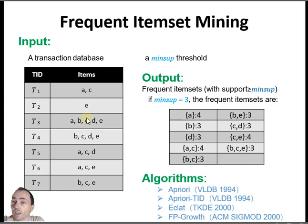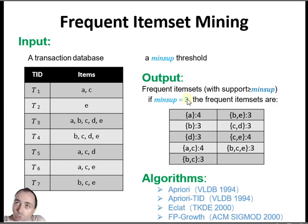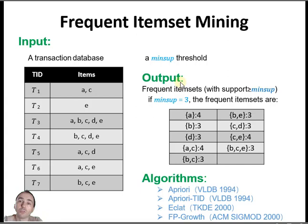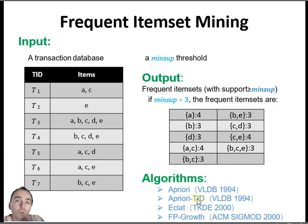We have a database — it could be about shopping or other things. For this problem called frequent item set mining, the user needs to set a minimum support threshold, meaning a minimum frequency, and we want to find what people buy many times together. If we set the minimum support to 3, we want to find all the frequent item sets — what people buy together at least 3 times. So apple appears 4 times, bread appears 3 times, apple and cake 4 times, and so on. There have been many algorithms to solve this problem.